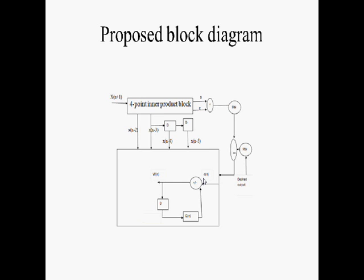The next block is the error correction block. E of N indicates the error correction value. If there is any error, it will go into the delay element block. The delay element is used to make the values time-constant. G of N is the obtained value. If there is no error, the value is taken as W of N. This is the operation of the RLS algorithm.